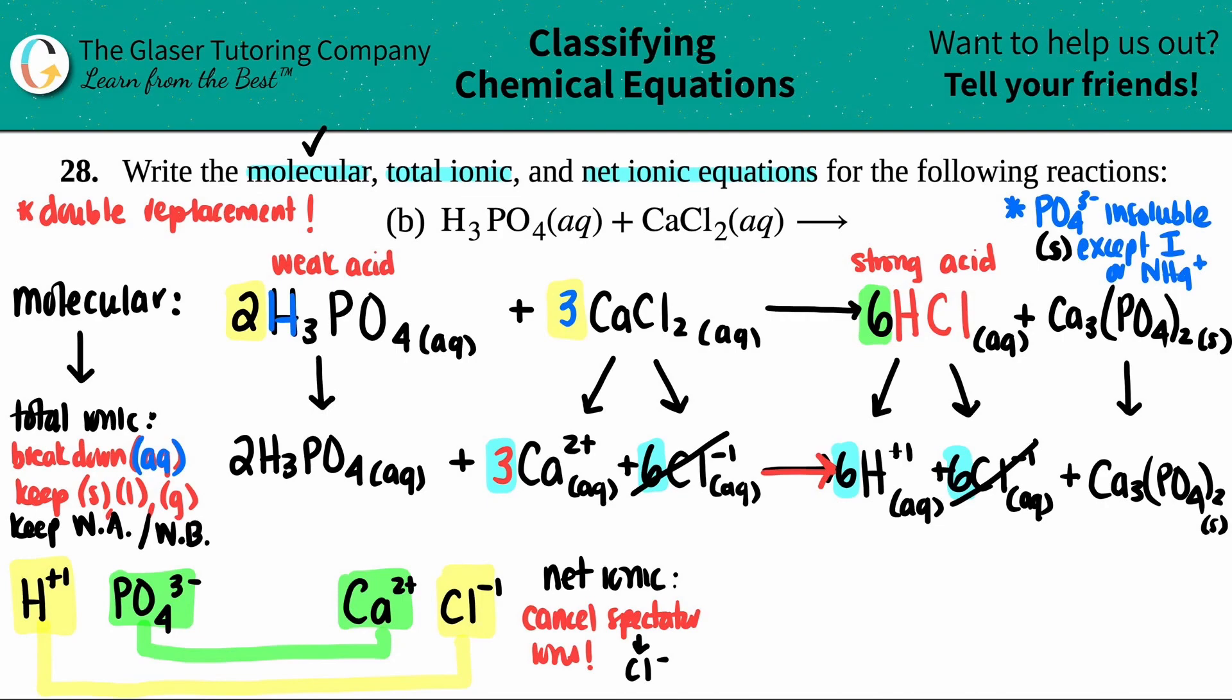So the net ionic is just rewriting your equation without those spectator ions. So it would just be 2H₃PO₄ aqueous plus 3Ca²⁺ aqueous yields 6H⁺ aqueous, and then Ca₃(PO₄)₂ solid. And that is your net ionic equation. There you go. You're just rewriting everything that you did not cancel out in your total ionic. And that's it.